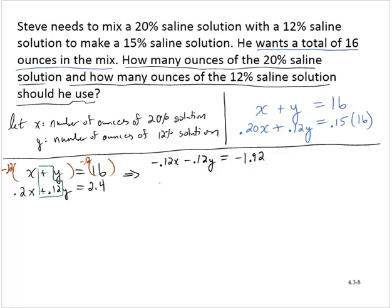The second equation I'm not changing, so I've got 0.2x plus 0.12y equals 2.4. Now I have an elimination on y. I'll add these equations together, yielding 0.08x, 0y, and negative 1.92 plus 2.4 yields 0.48.